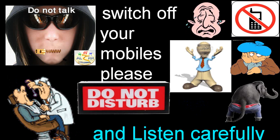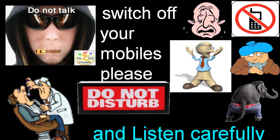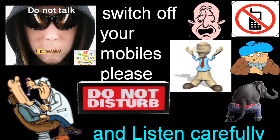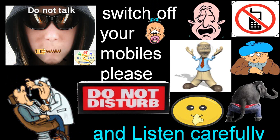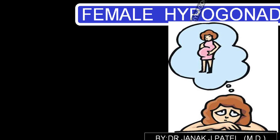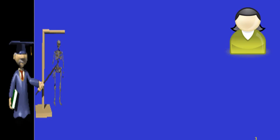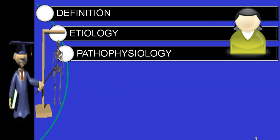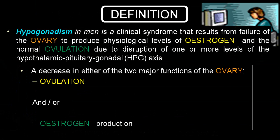Good morning, I'm Dr. Janak Patel, MD, general physician. Today we'll be talking on another topic in endocrinology: female hypogonadism. You do come across cases of hypogonadism in a female once in a while. The meaning is simple — if there is a decreased function of the gonads, that is the ovary in a female, you call that hypogonadism. We'll discuss definition, etiology, pathophysiology, clinical features, investigations, diagnosis, and treatment.